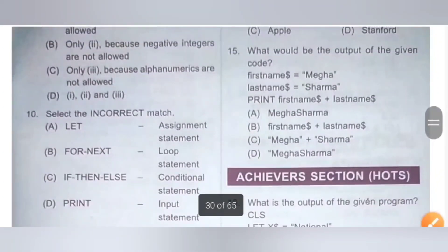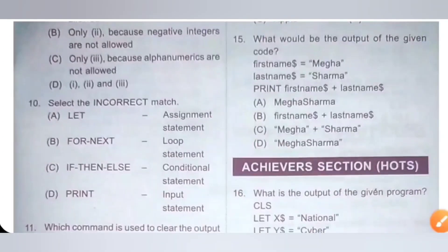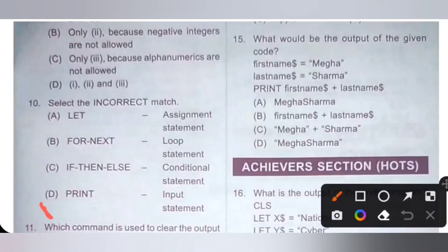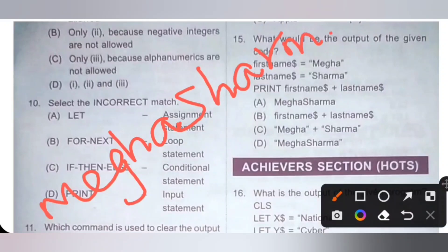Fifteenth question: what would be the output of the given code? LET FirstName$ = "Mega", LET LastName$ = "Sharma", PRINT FirstName$ + LastName$. We are merging the two strings, so the output will be MegaSharma — wait, the output is "Mega Sharma". Option A is the correct answer.